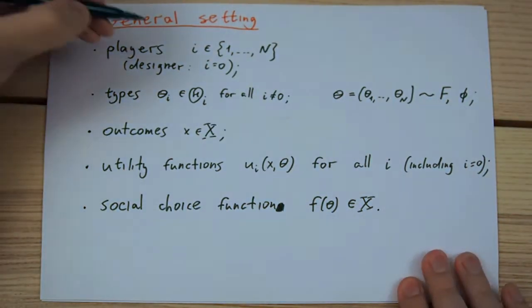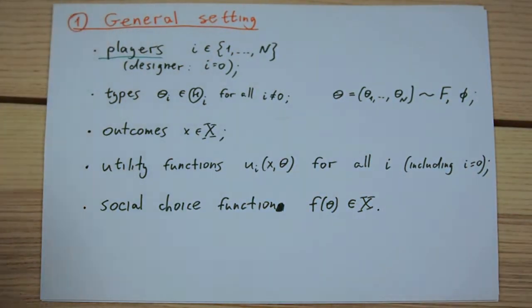The first is the set of players labeled from 1 to n with the generic player denoted by i. We will further refer to the designer of the mechanism as player 0.